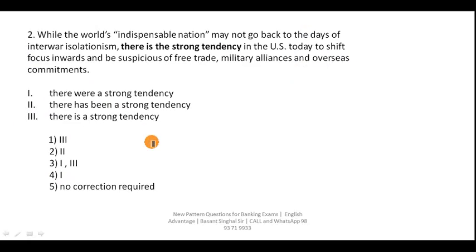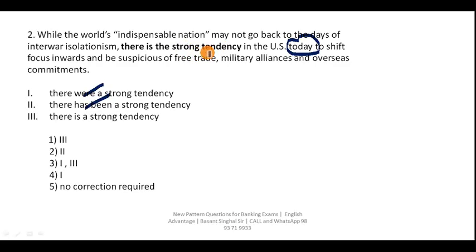Question 2: 'While the words indispensable nation may not go back to the days of interwar isolation, there is the strong tendency in the US today.' The keyword is 'today,' which indicates present time. So you cannot use past tense or present perfect tense here. Also, 'tendency' is a countable noun, so you must say 'a strong tendency,' not 'the strong tendency.' These two options are inappropriate, and only the third option — given as answer choice 1 — is right. Your answer is first.